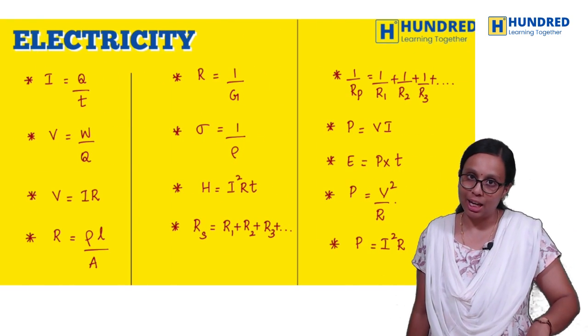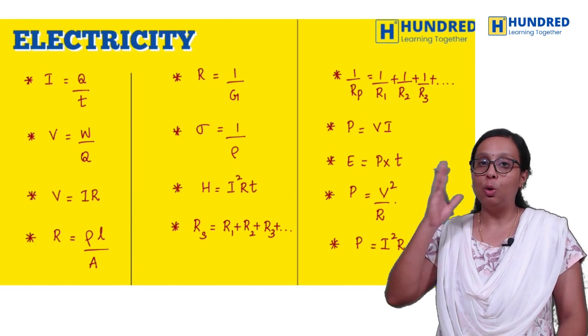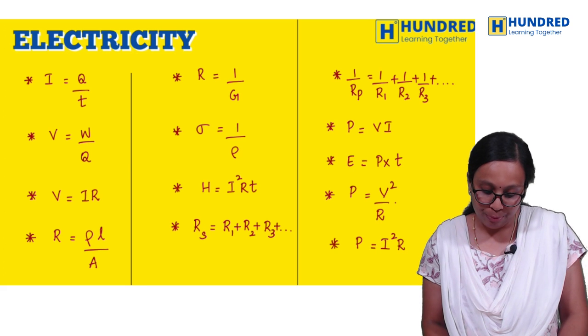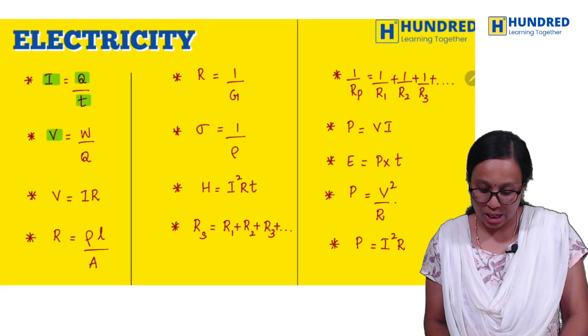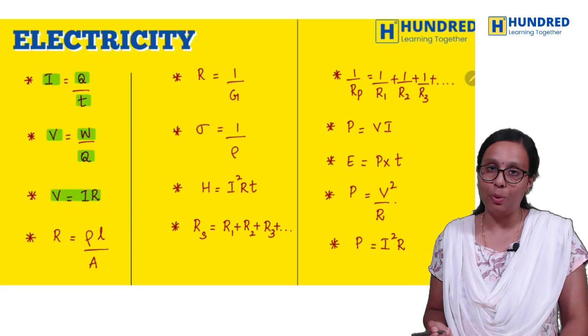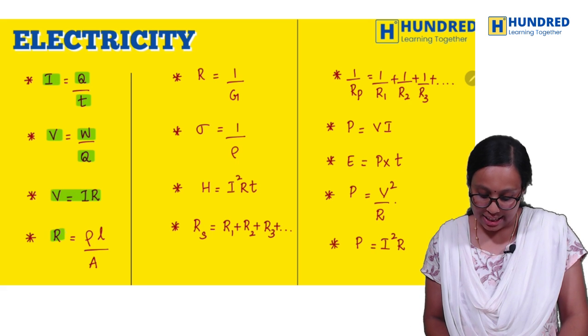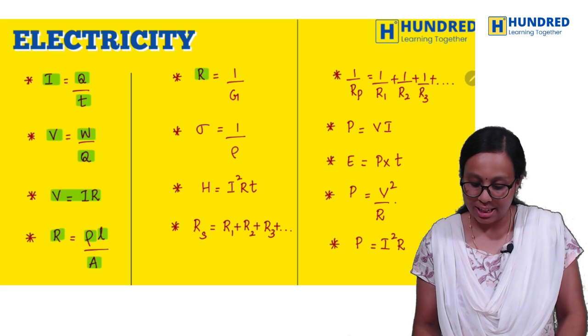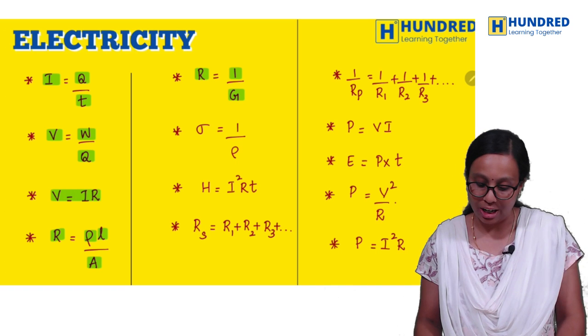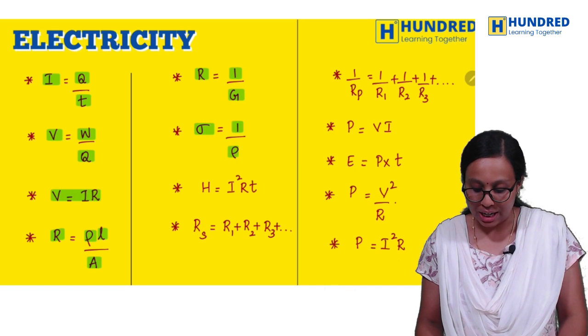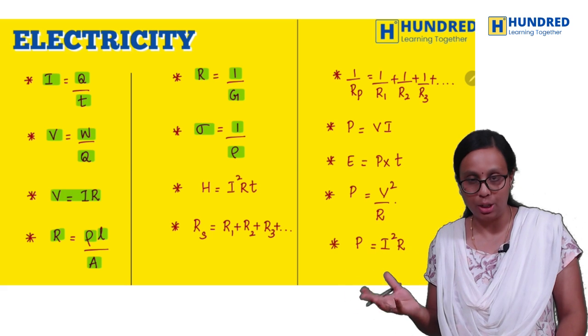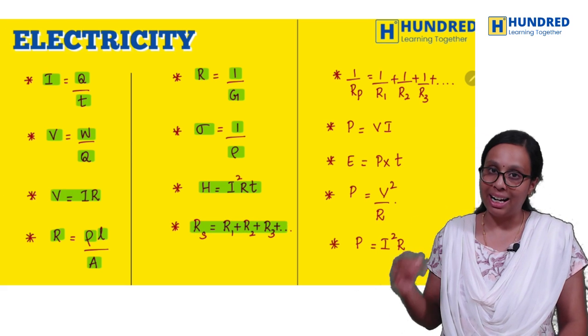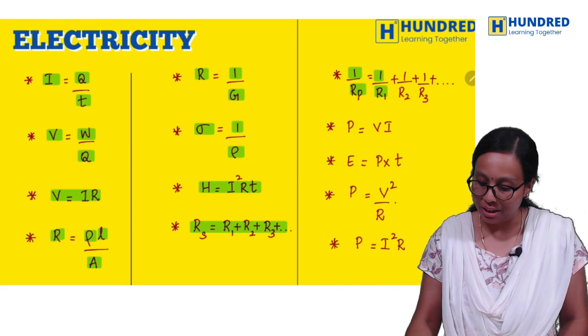Next, electricity. Current equals charge by time. Potential equals work done in moving a charge. Ohm's law: V equals IR. Resistance equals resistivity into length by area. Conductance and resistance is reciprocal.